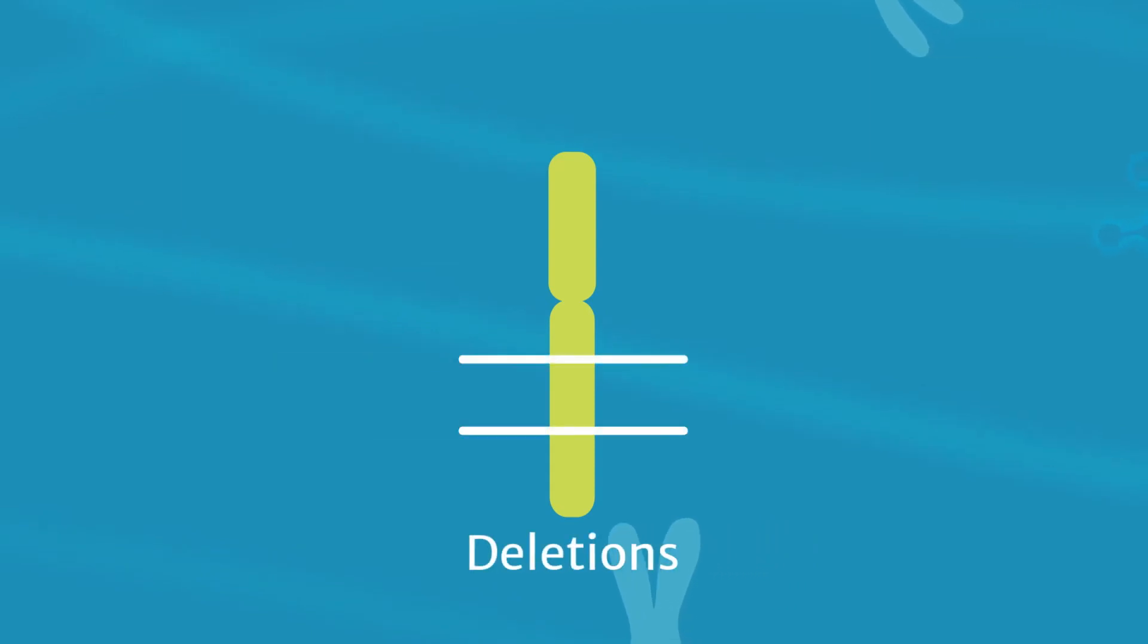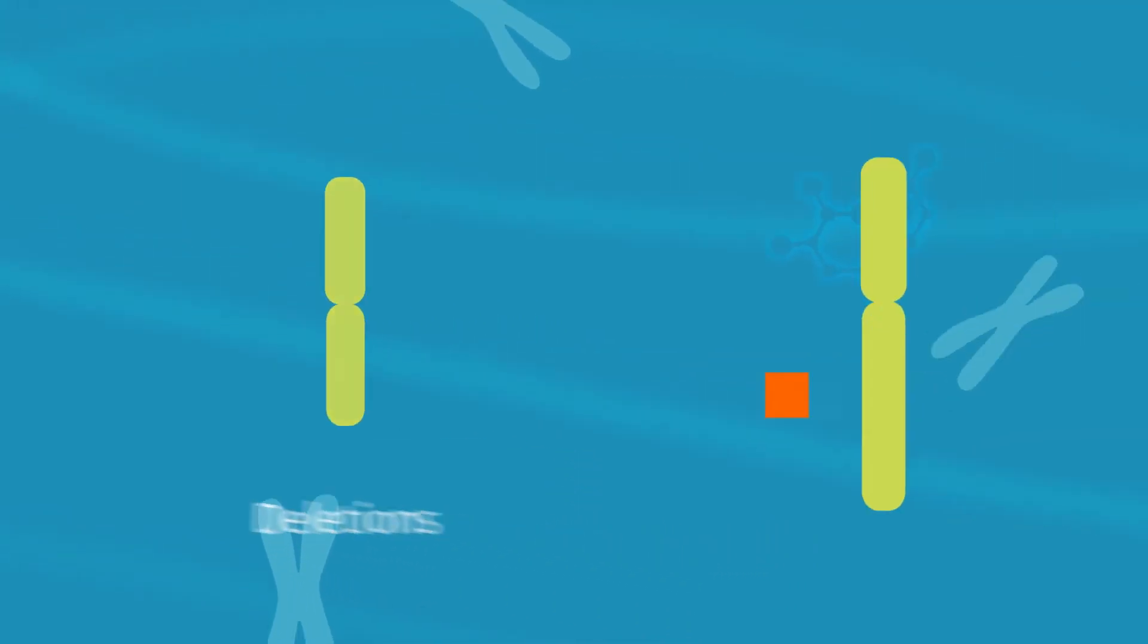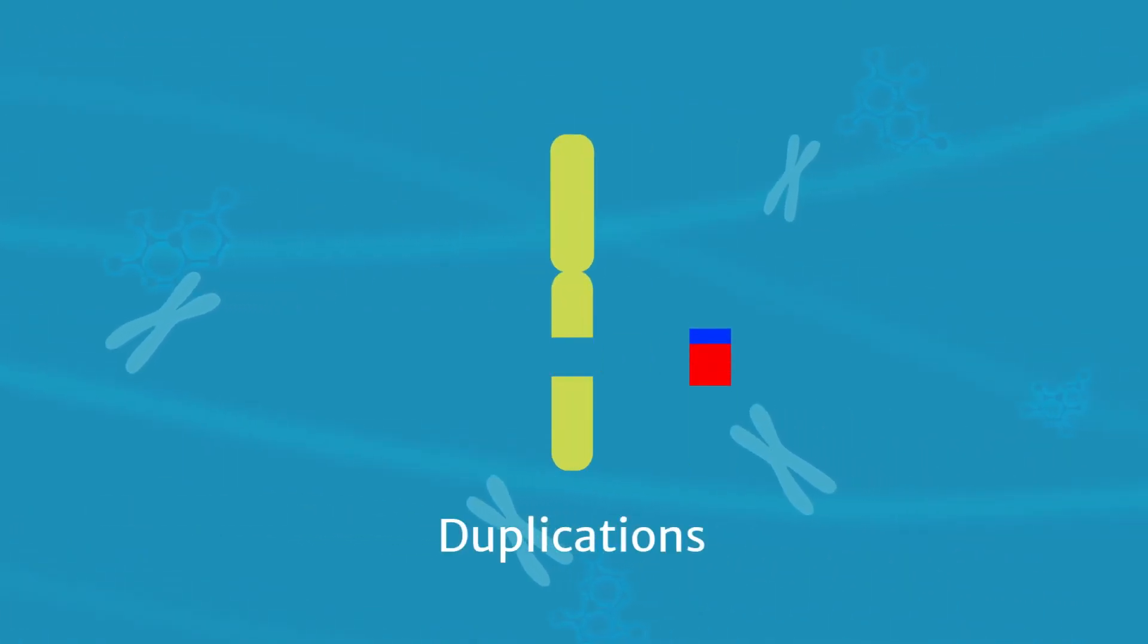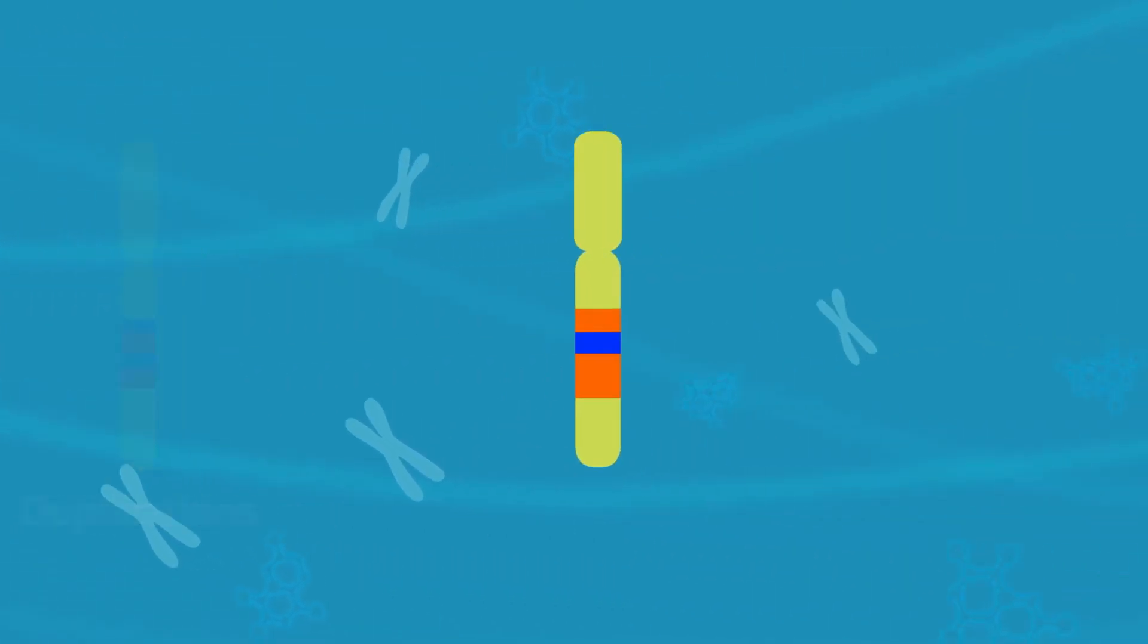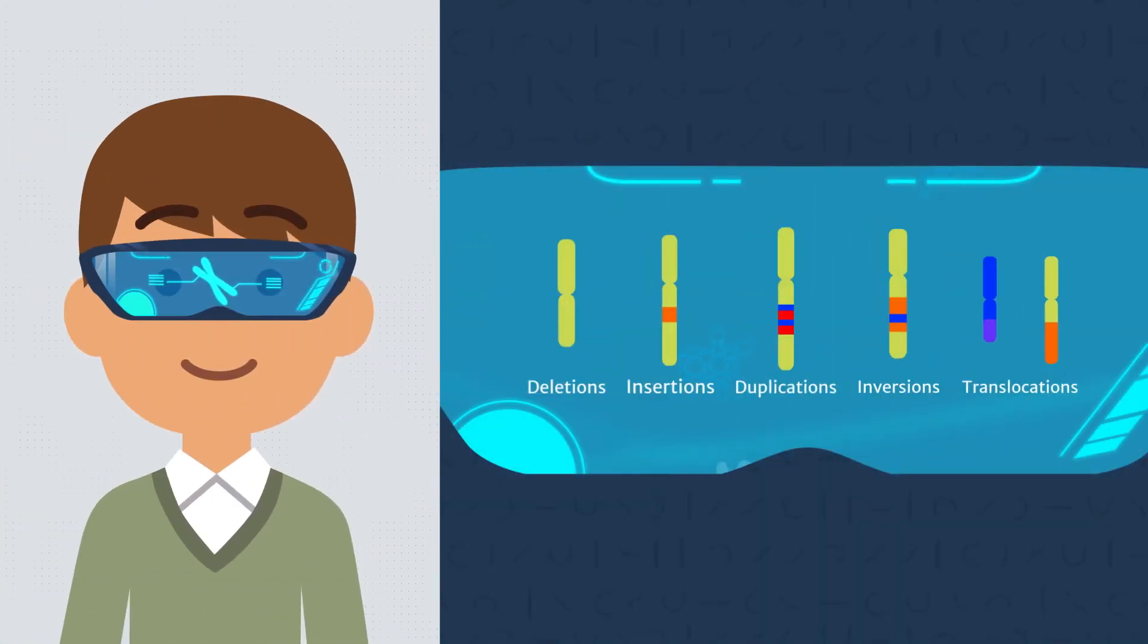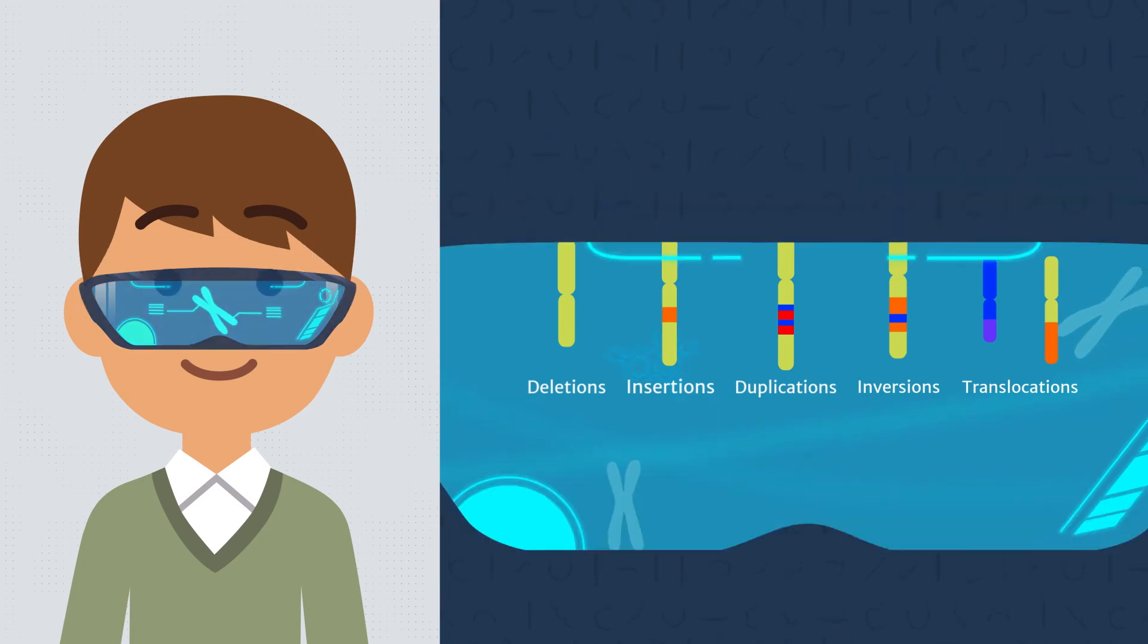Variations in the form of deletions, insertions, duplications, inversions, and translocations, all of which are not detected by short-read sequencers.